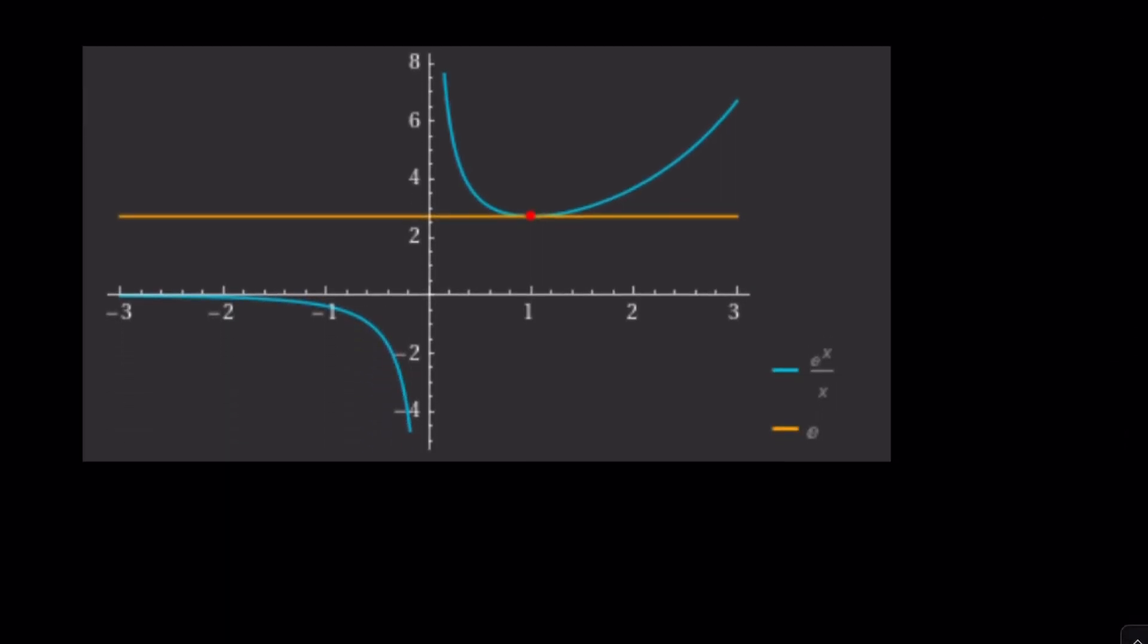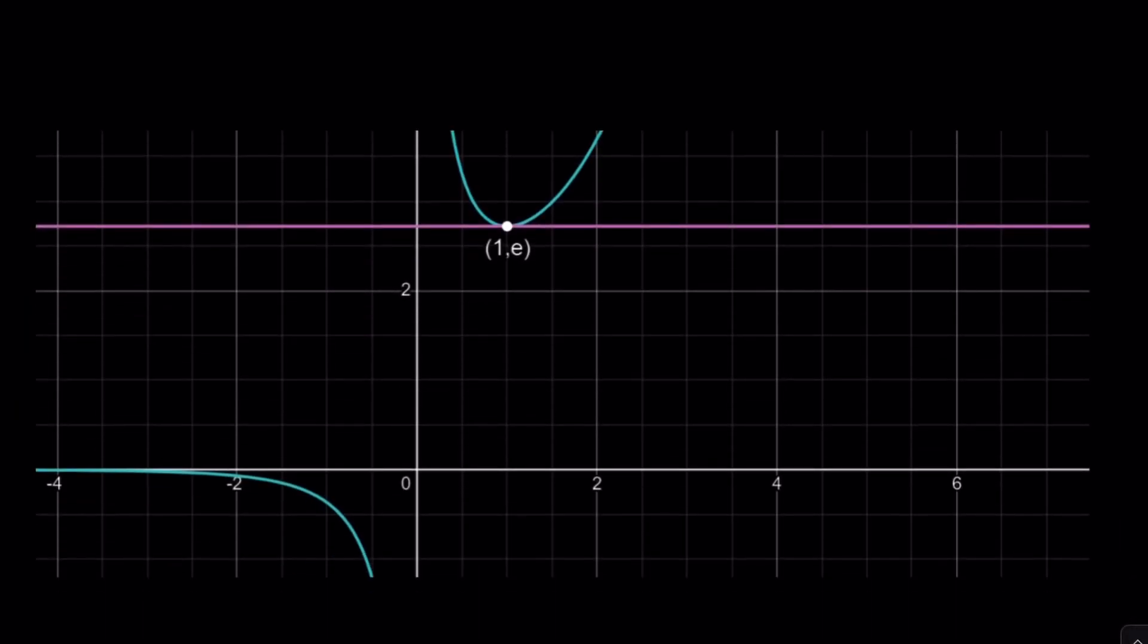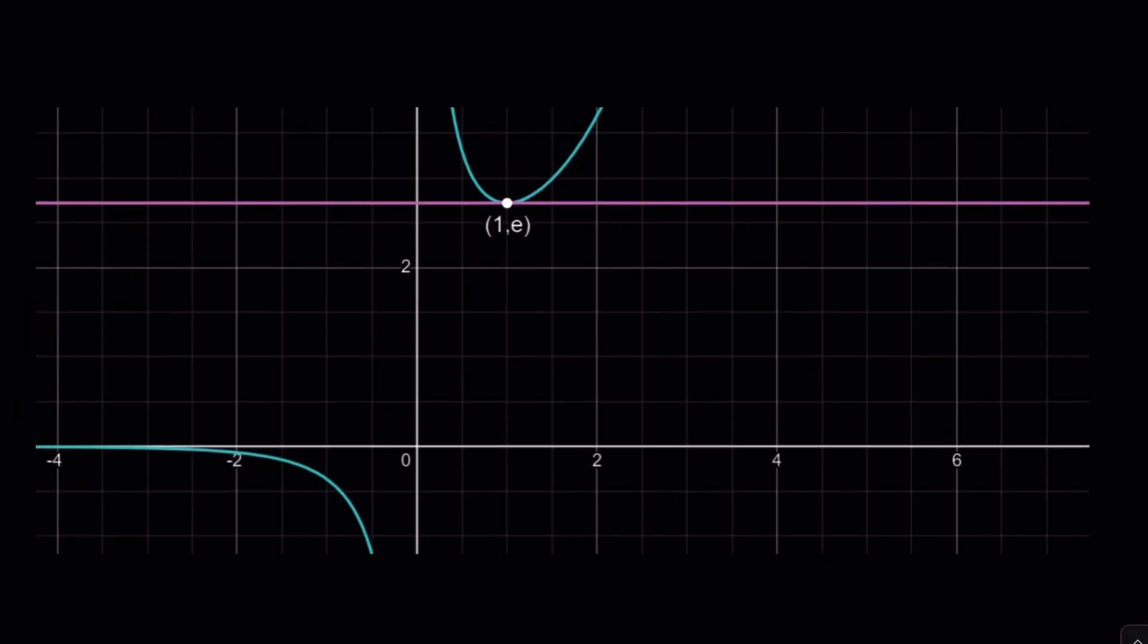And here's the graph by Wolfram Alpha which is pretty nice and scaled appropriately so it can fit on the screen. As you can see the horizontal line is tangent, therefore there's only one solution. And the graph by Desmos is very similar to this one but scaling is a little different there.